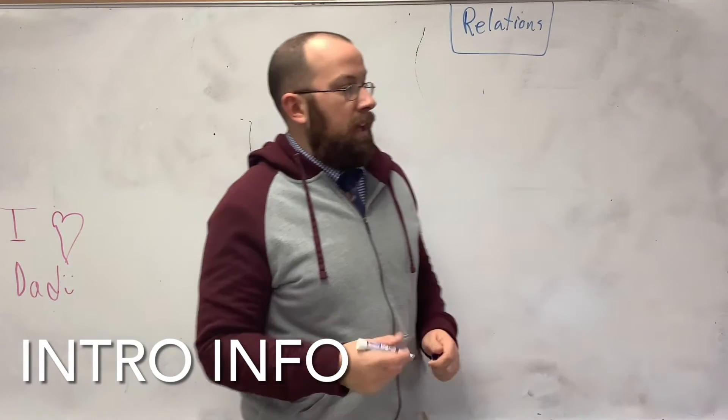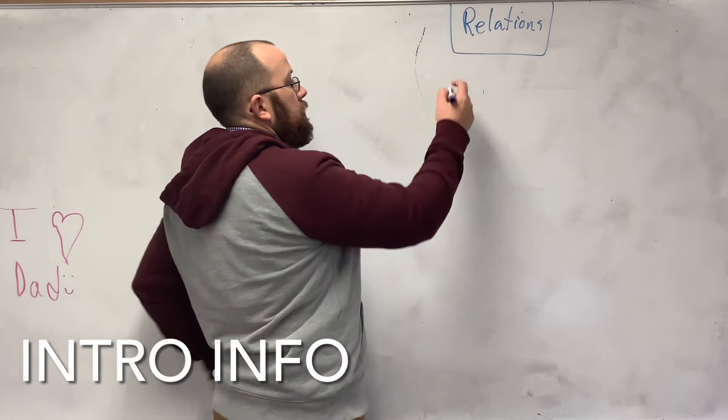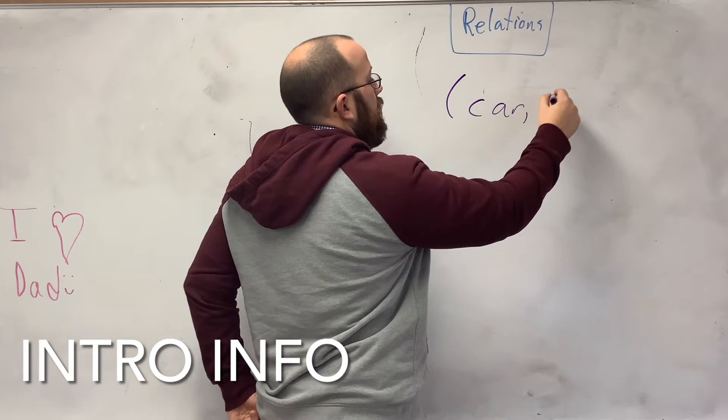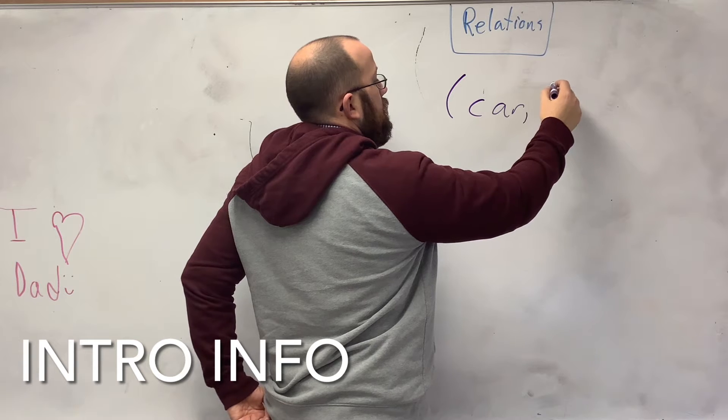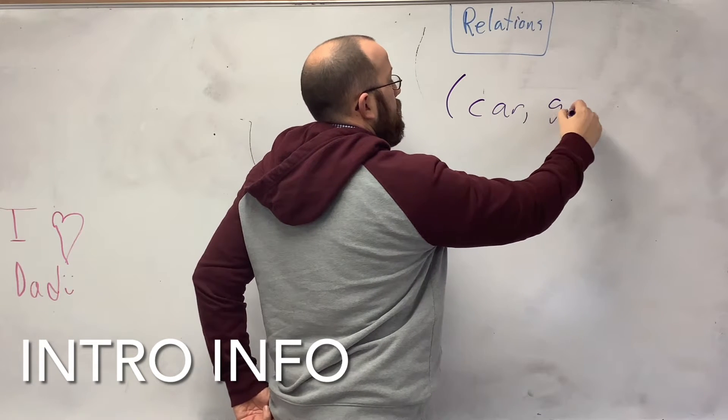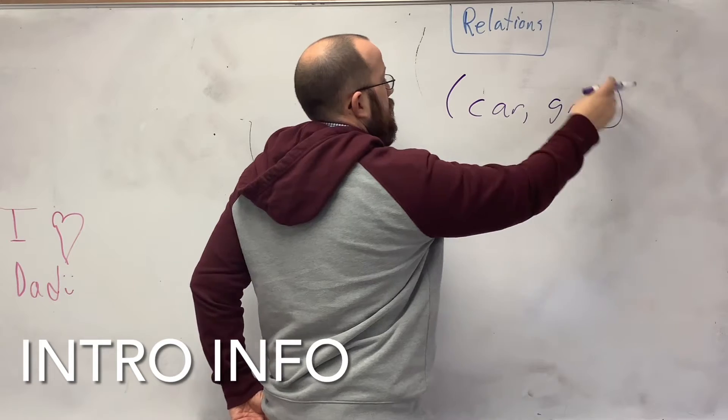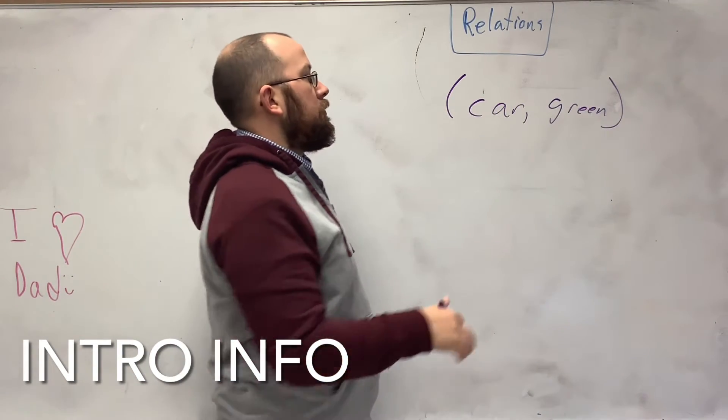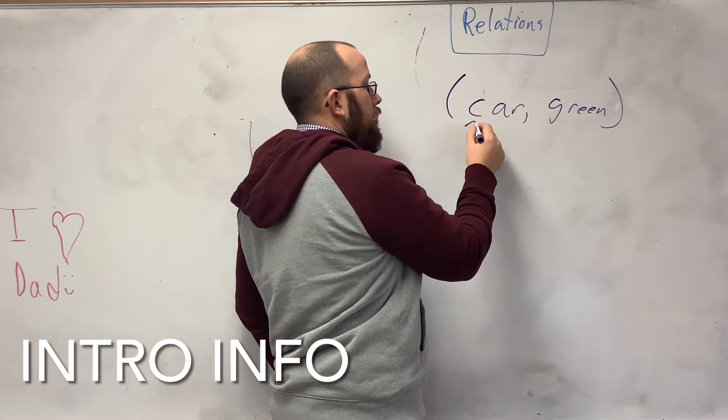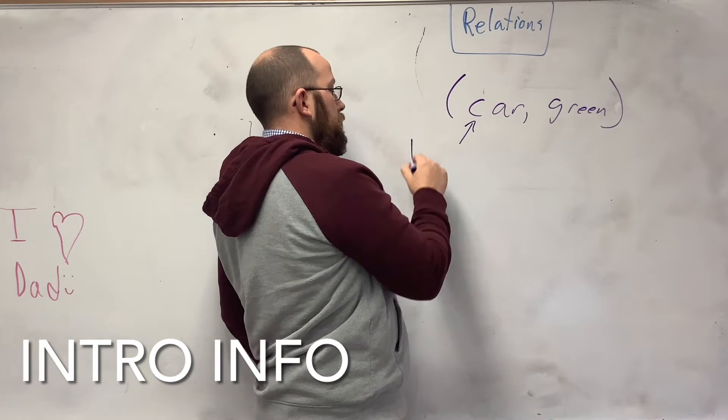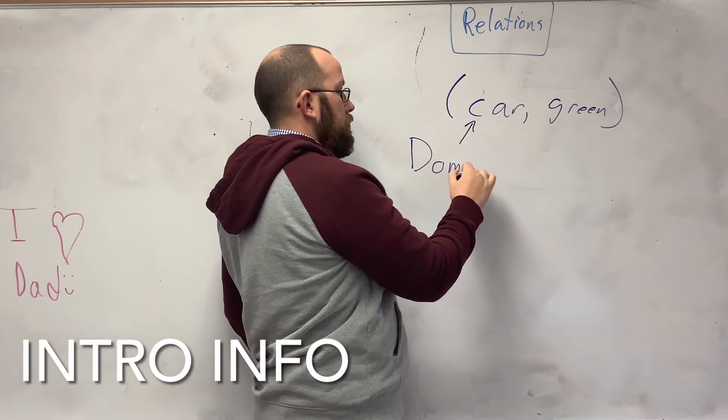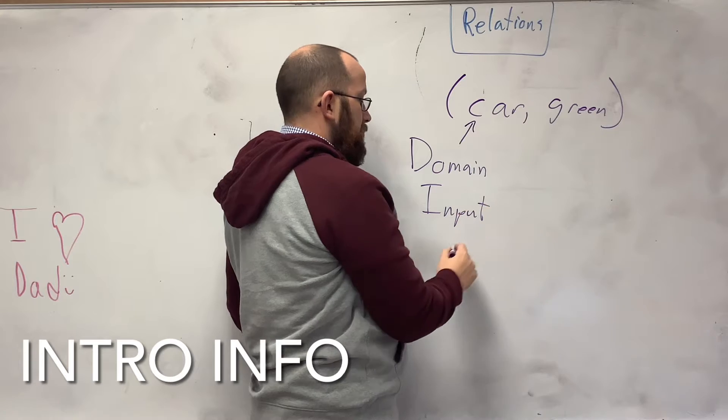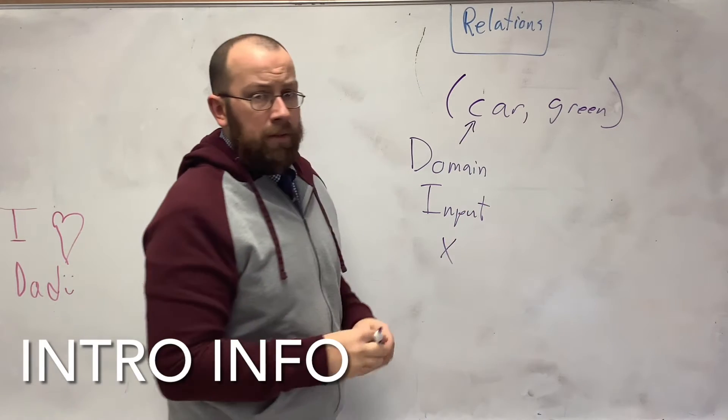When you have a pair of numbers, say we have car and green, this is our point, this is our relation here. So car, green. The car is what is called our domain, or our input, or simply it's just the x value of that point.